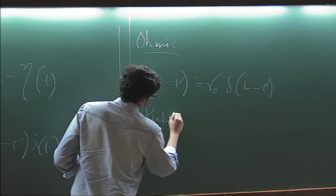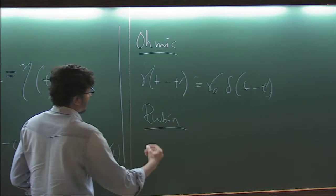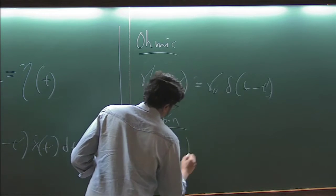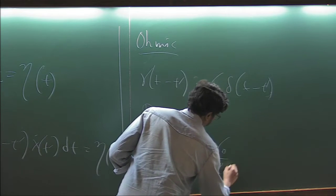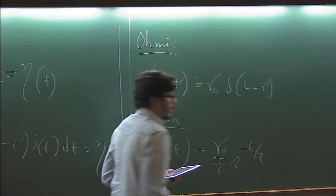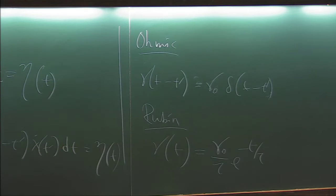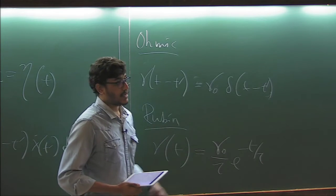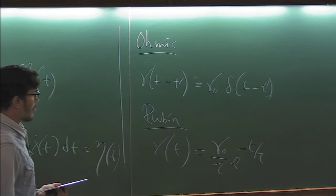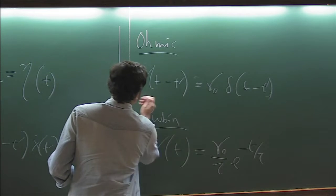And for Rubin, Rubin generalized this a little bit and introduced a memory. So it said like gamma zero by tau into e to the minus t by tau. So there is some memory, but it is exponentially decaying, with the characteristic time tau. So this function looks familiar, right? If I took tau tends to zero, we get this delta function back.